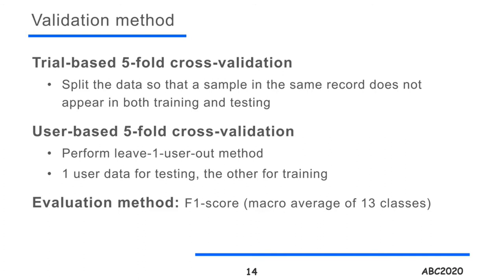As the validation method, we adopted two types of cross-validation. The first one is trial-based cross-validation, where we split the data so that a sample in the same record does not appear in both training and testing. The second one is user-based cross-validation, where we perform the leave-one-user-out method. As an evaluation metric, we adopted F1 score.